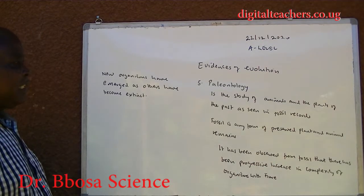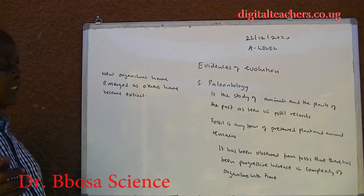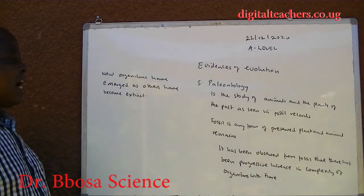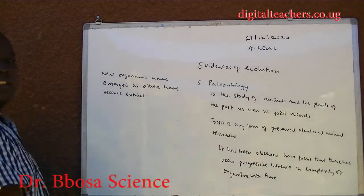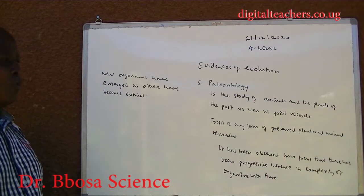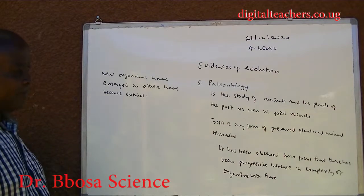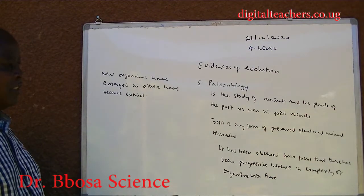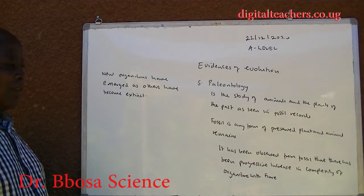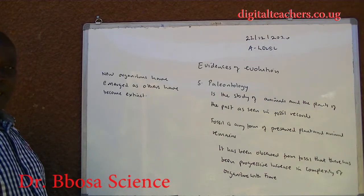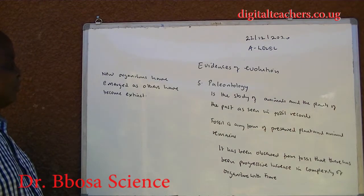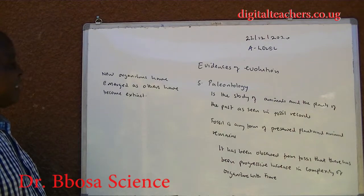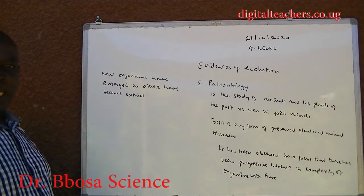Five: paleontology is the study of animals and plants of the past as seen in fossil records. A fossil is any form of preserved plant and animal remains. It has been observed from fossils that there has been a progressive increase in the complexity of organisms with time. New organisms have emerged as others become extinct.